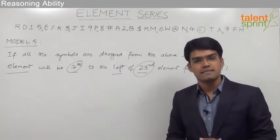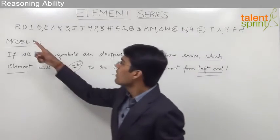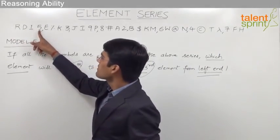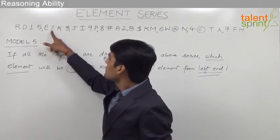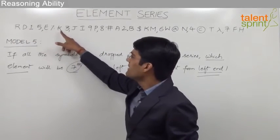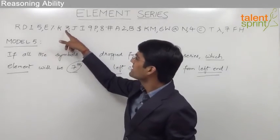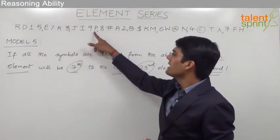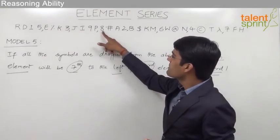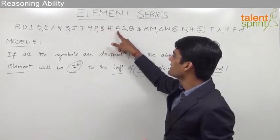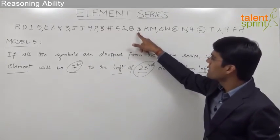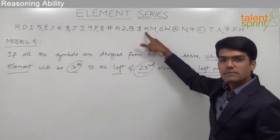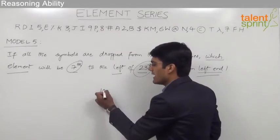So the answer would be 1, 2, 3, 4, 5. We cannot consider the symbol here, so this is 5 and the next element would be K, that is 6, 7, 8, 9, 10, 11, 12. Skip the symbol hash, this becomes 13, 14, 15. Skip the symbol dollar, and then 16. So the answer here would be the element K.